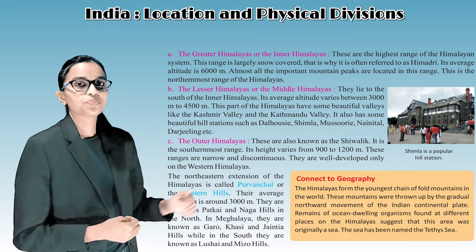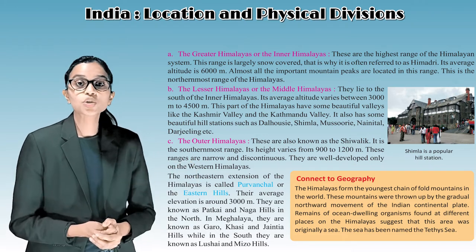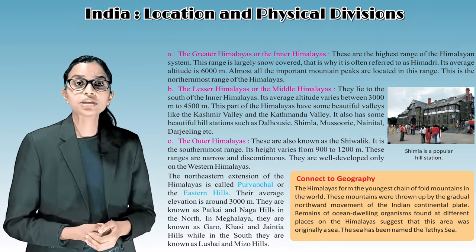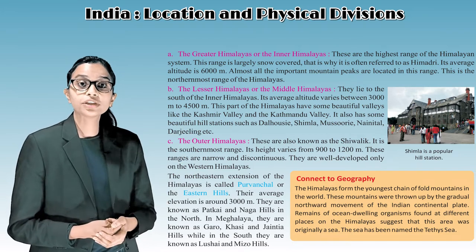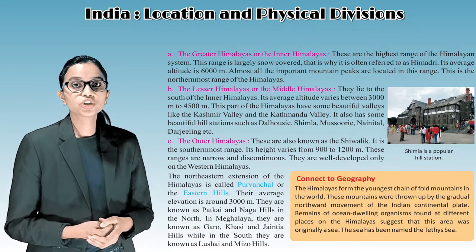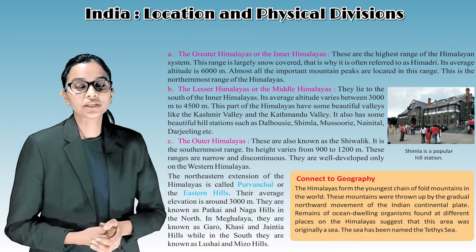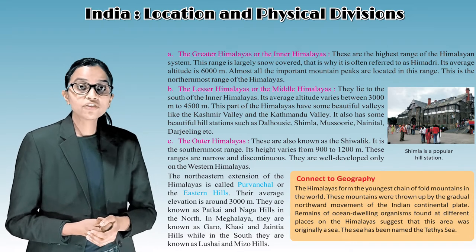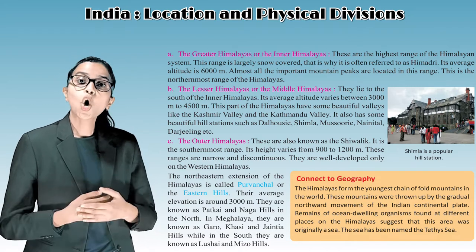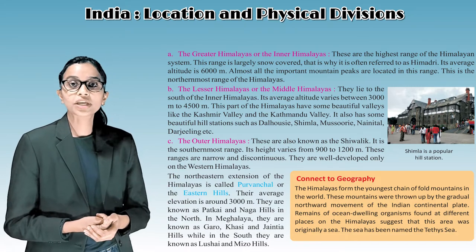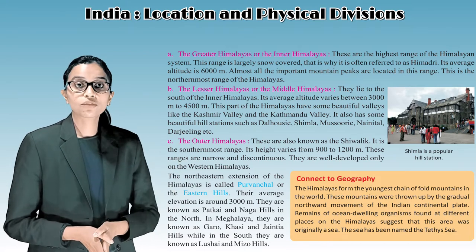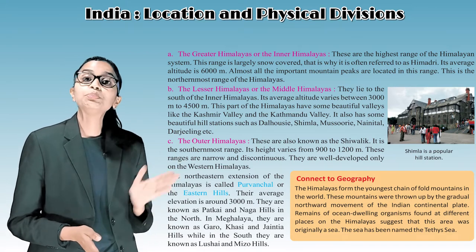From north to south, the Himalayas consist of three parallel ranges. First, the Greater Himalayas or Inner Himalayas are the highest range of the Himalayan system, largely snow-covered and often referred to as Himadri. Their average altitude is 6,000 meters. Almost all important mountain peaks are located in this range. This is the northernmost range of the Himalayas.